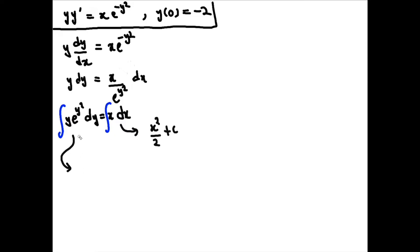We can recognize that if we let u equal y squared, then when you differentiate y squared you get 2y, and we have a y here — so it looks like a good candidate for integration by substitution. Let u equal y squared, then differentiating both sides, du equals 2y dy.